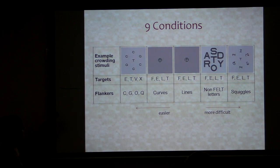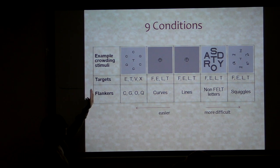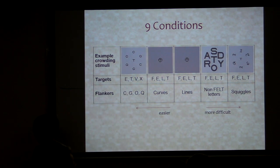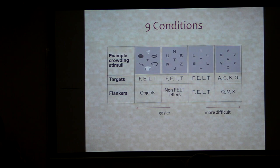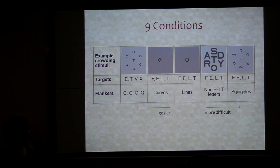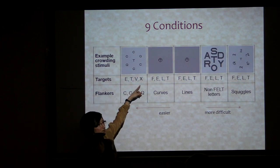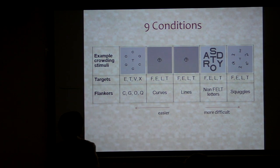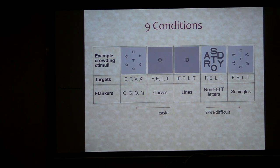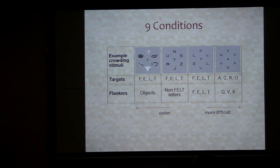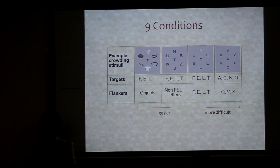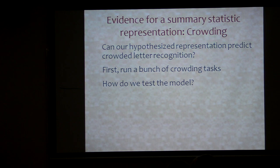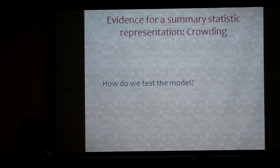We have nine conditions ranked in order from easiest to most difficult. In each of these cases there are four possible targets in the center, and a number of different kinds of flankers — other letters, lines, squiggles, toasters, things like that. The subject's task is always to recognize that central item. How do we actually test the model? This is the tricky part, because those thousand numbers are hard to think about.